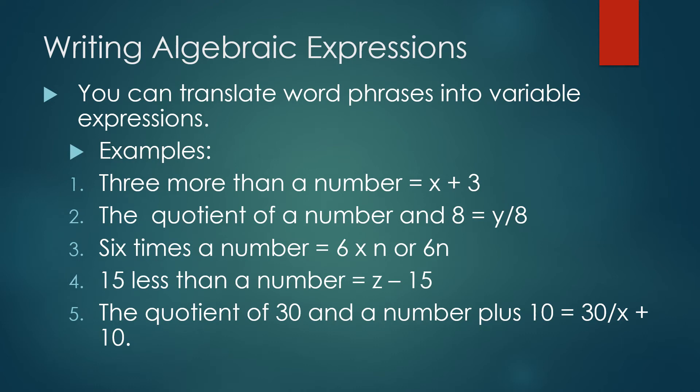The quotient of 30 and a number plus 10. A quotient of 30 and a number, 30 and a number means 30 is a dividend. 30 upon x plus 10.